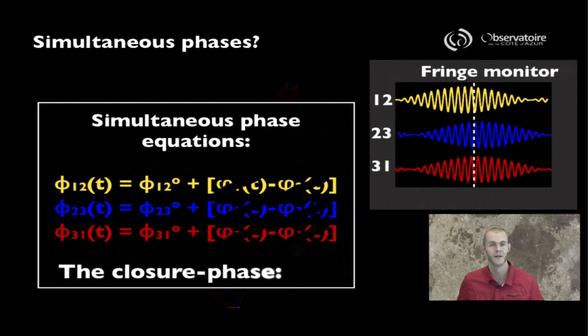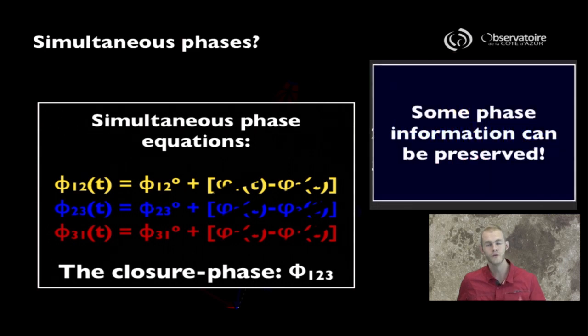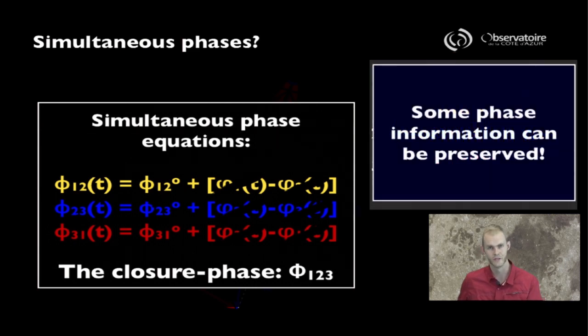In the end, you're left with a new observable quantity, something that is called the closure phase, something that was first developed for radio interferometry, and then much later adapted to visible or optical interferometry. And the closure phase is this extraordinary observable quantity that is insensitive to the presence of the atmosphere.